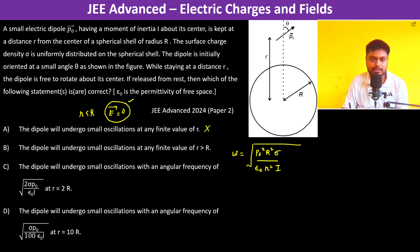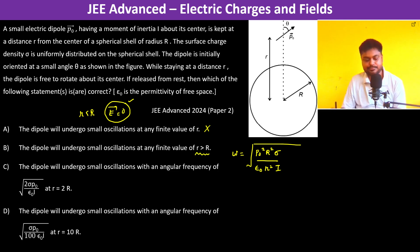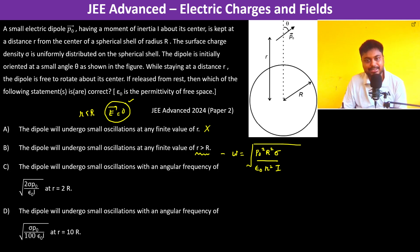Option B: the dipole will undergo small oscillations at any finite value of r greater than R. Yes, because we are getting a valid ω for all r > R. So option B is true.